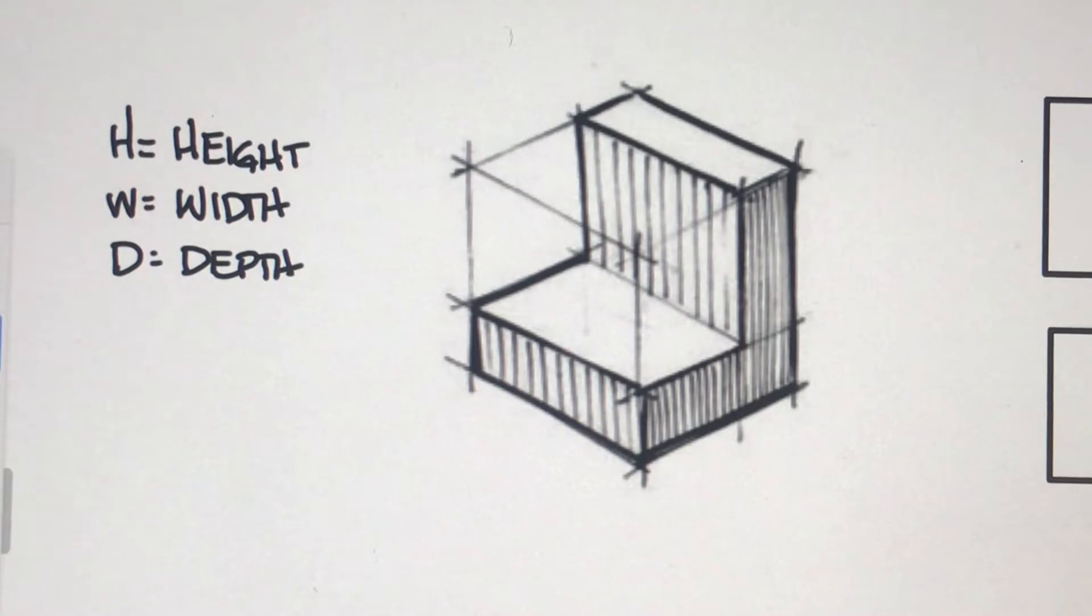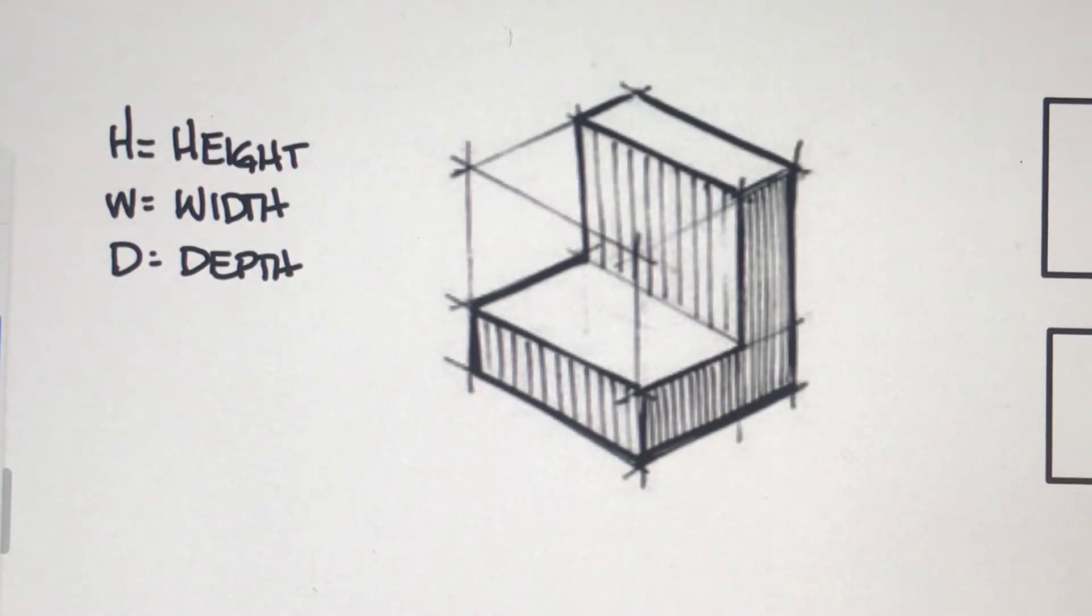Now that we understand how to see the top, the front, and the right side of parts, we need to center our drawings in the Layout C title block.